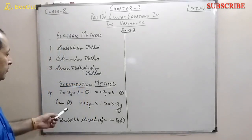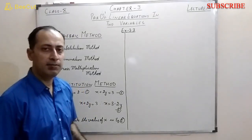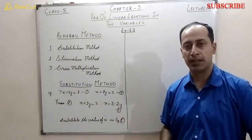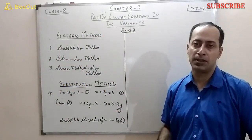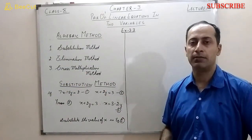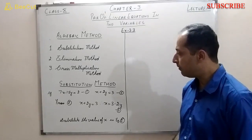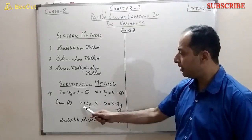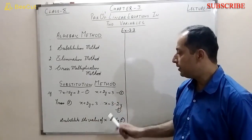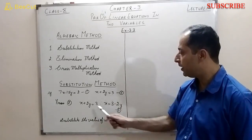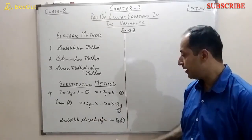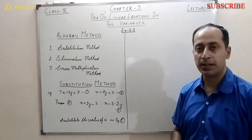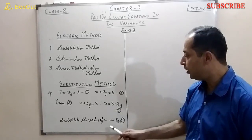Let's take an example. The first equation is 7x minus 15y equals 2, and the second equation is x plus 2y equals 3. You have a choice of which equation to use. I take the second equation and find the value of x in terms of y: shifting 2y to the right gives x equals 3 minus 2y — call this equation 3.